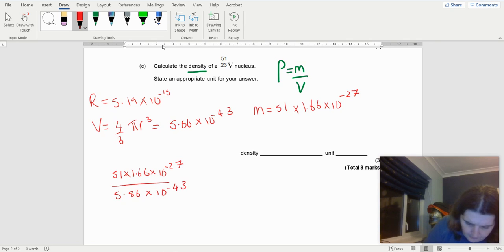So 51 times by 1.66 × 10⁻²⁷, divided by my answer, and I get an answer of 1.44 × 10¹⁷ kilograms per meter cubed.